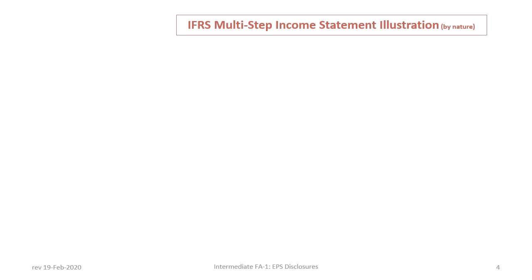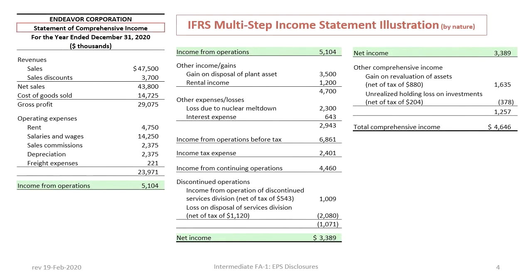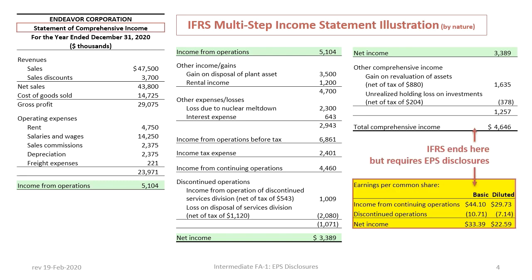Here is the summary of the presentation of the Statement of Comprehensive Income for Endeavour Corporation, as presented in tutorials 1 through 3. We will be focusing on the calculation and presentation of earnings per share, here in this section highlighted yellow. Remember that EPS disclosures are required only under IFRS reporting, and not required under ASPE.